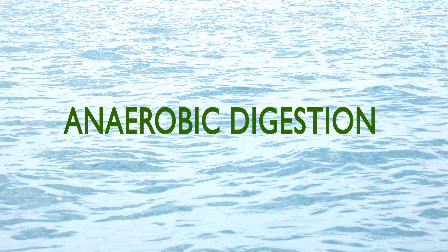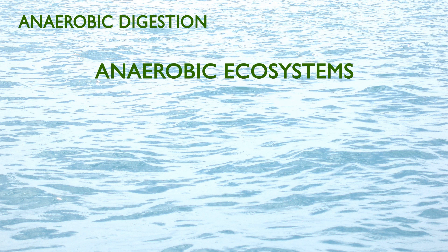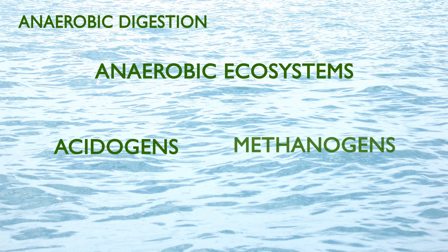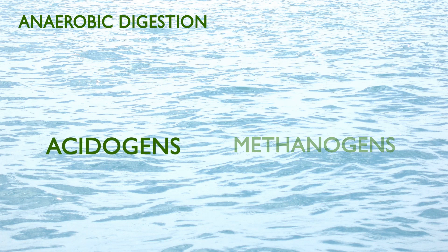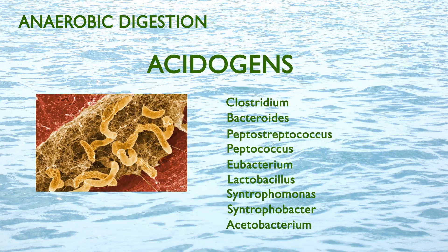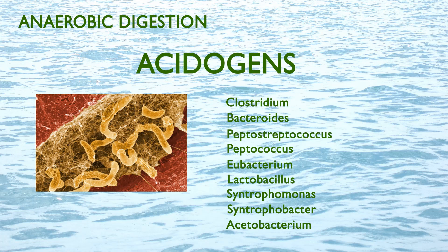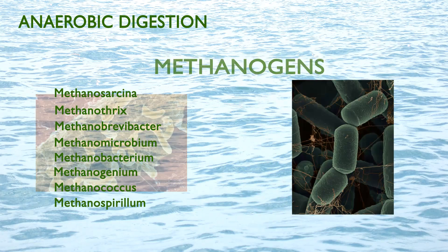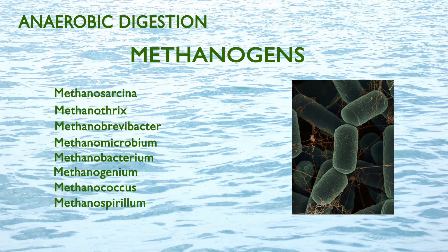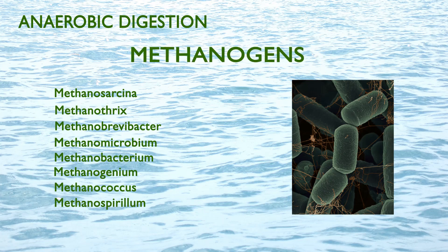The ecosystem for anaerobic digestion is mainly composed of facultative and obligate anaerobes. One major group is named acidogenic bacteria, as they produce organic acids from the sludge carbohydrates. Another group is the methanogens — archaea that produce biogas from the organic acids.